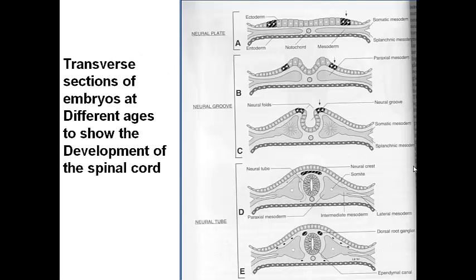Before starting to talk about the developmental abnormalities specifically, we have to understand the embryology of the spinal cord. The neural plate has to invaginate in order to form the neural tube. This neural tube forms from the cranial end to the caudal end of the fetus — from the head to the lower back. Any failure of closure of this neural tube at either the cranial or caudal aspect will lead to a neural tube defect.